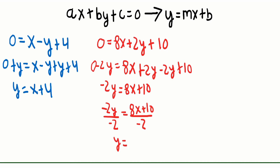We divide both sides by negative 2: negative 2Y divided by negative 2 equals 8X plus 10 divided by negative 2. We have to divide each term by negative 2: 8X divided by negative 2 is negative 4X, and 10 divided by negative 2 is negative 5. So we have Y equals negative 4X minus 5.